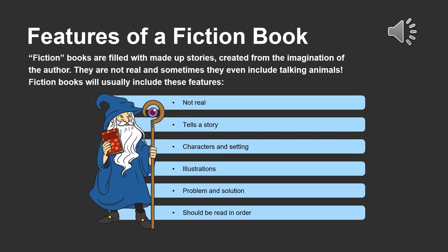The other type of writing we're going to deal with is fictional books. Fictional books are filled with made-up stories created from the imagination of the author. They're not real and sometimes even include talking animals. Fictional books feature not-real stories — an imaginative kind of story. You'll have characters and setting, problems and solutions, and a dynamic plot that starts with an exposition and ends with a resolution. So you're going to have a conflict, a problem, rising action, falling action, a climax — all of these events in one plot.